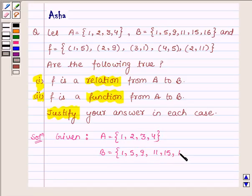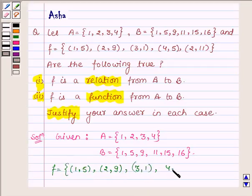11, 15 and 16 respectively and F is a set having ordered pairs (1,5), (2,9), (3,1), (4,5) and (2,11)